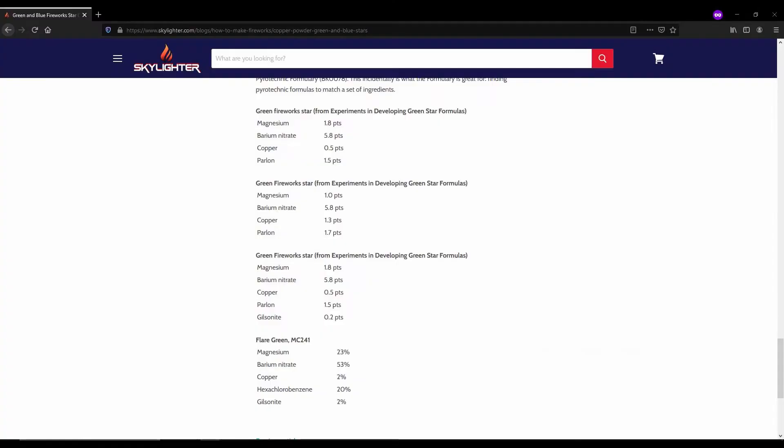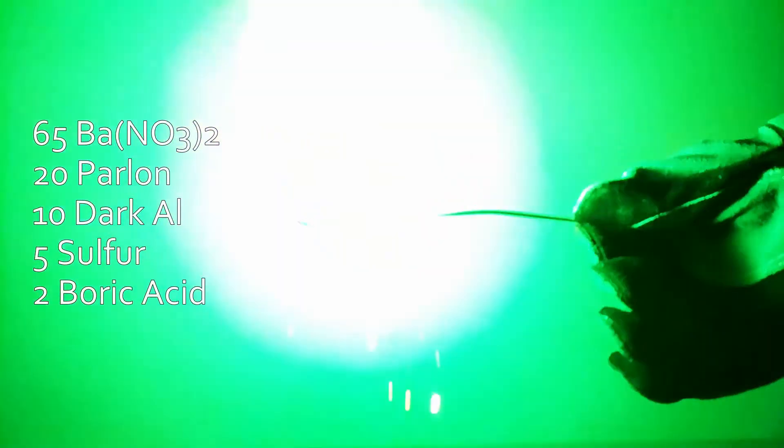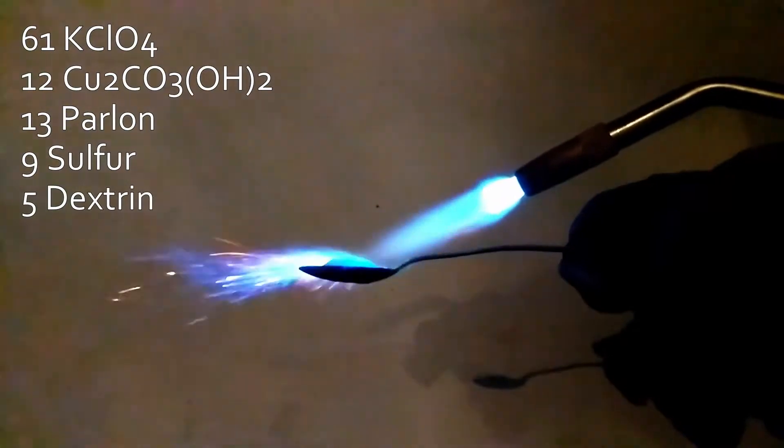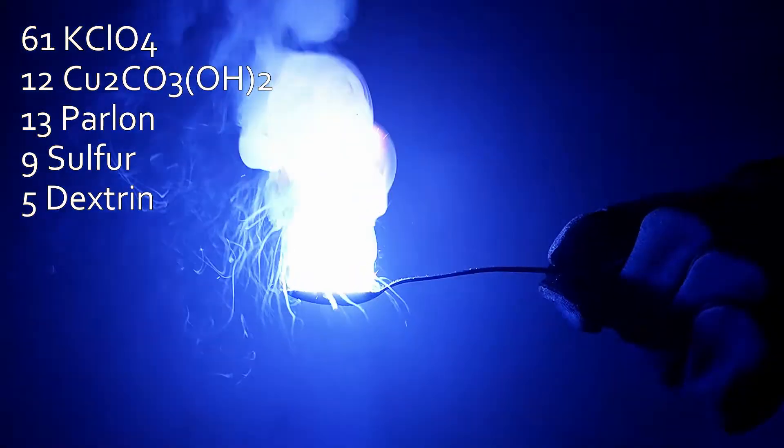As I said, copper ions normally impart a green hue to flames, and there are some bizarre green compositions floating around that call for copper powder. I've never personally felt that they outperformed barium salts for this task, and most of the industry seems to agree. Instead, we prefer to use copper salts with a source of chlorine to produce blue.